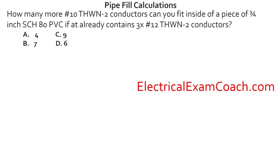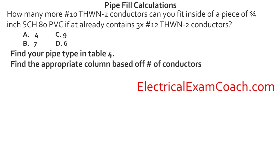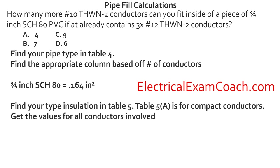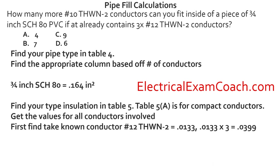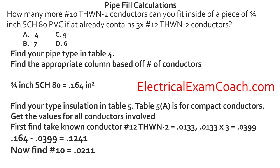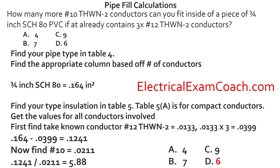Question: How many more number 10 THWN-2 conductors can you fit inside a piece of 3/4-inch Schedule 40 PVC that already contains three number 12 THWN-2 conductors? Head to Chapter 9 Table 4, find 3/4-inch Schedule 40, get the 40% column value. Then Chapter 9 Table 5 for THWN-2 values for number 12 and number 10. Multiply 3 × the number 12 area, subtract from total, divide remaining by number 10 area: result is 5.88. Since 0.88 is 0.8 or greater, we round up to 6.